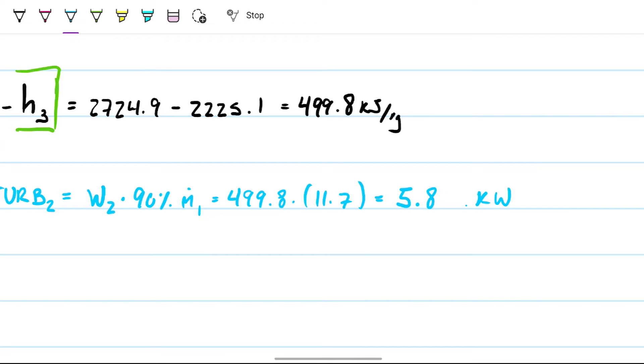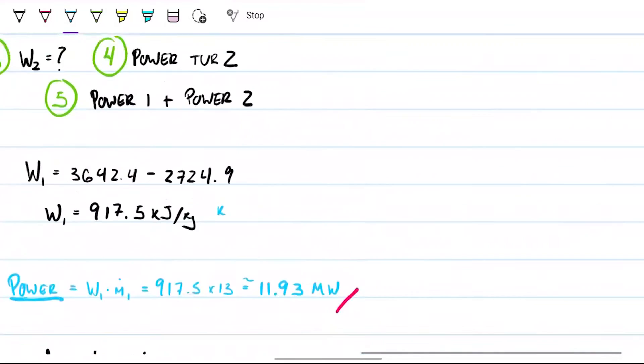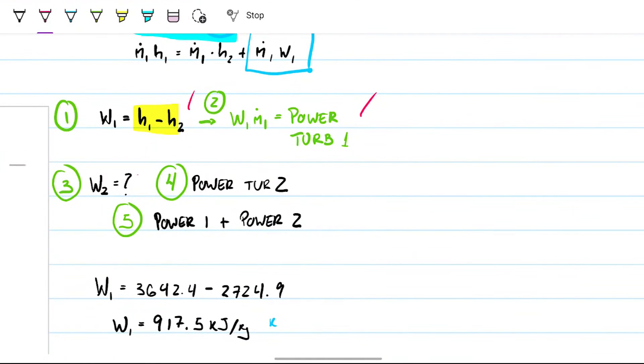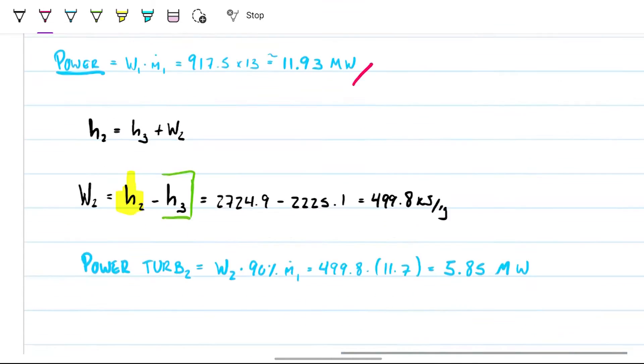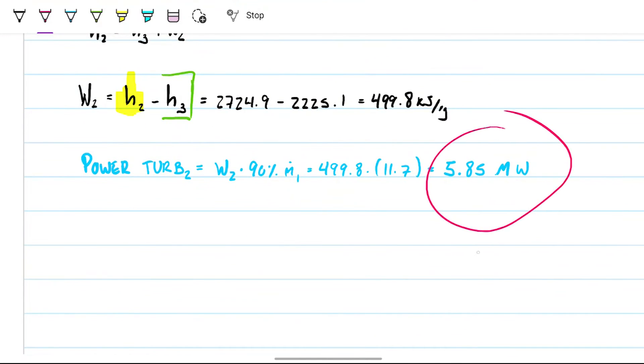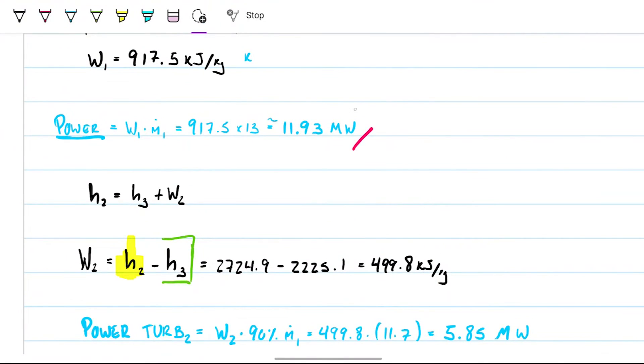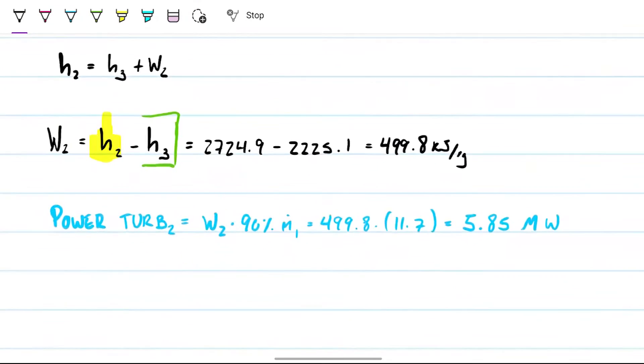And I can do the same thing, converting this to 5.85 megawatts. Okay, so done. Last step, what is the power of this guy? Two turbines. So the total power I can output is the 11.93 plus the 5.85.